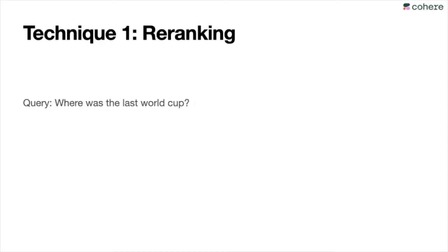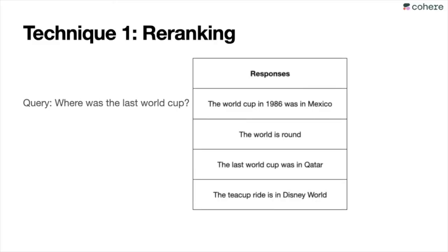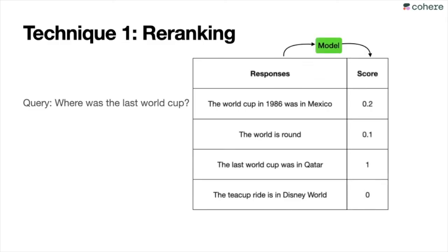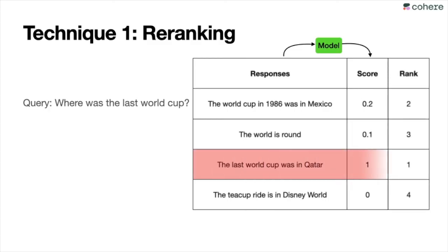So we combine embedding plus re-ranking to search better. Given the query, the embedding returns the closest sentences, then the re-ranking model scores all of them, assigns higher scores to better answers, and the one with the highest score is returned as the answer. This has given great results in terms of searching.